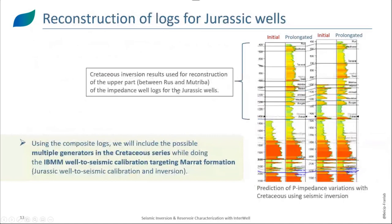The second step, once we have performed the inversion using the Cretaceous wells, is the reconstruction of the Jurassic wells that were missing information in the Cretaceous part. We have the two initial Jurassic wells missing the top part in the Cretaceous. We used the results from the Cretaceous inversion to prolongate the acoustic impedance logs, generating composite logs. This will include the possible multiple generators in the Cretaceous series when we perform the IBMM well-to-seismic calibration targeting the Marat formation.